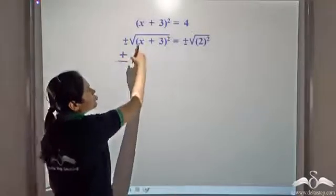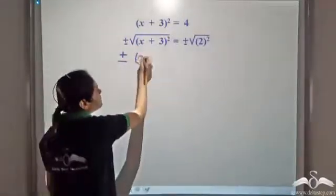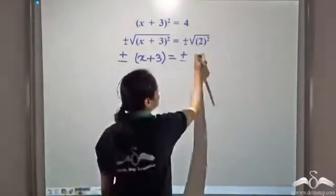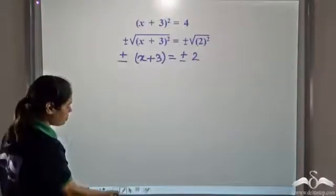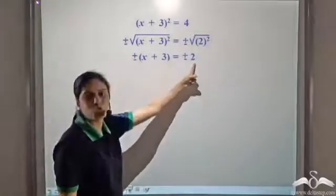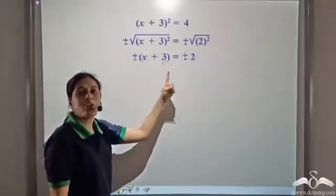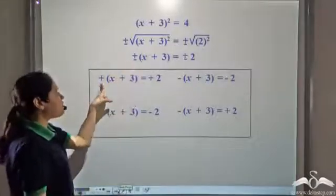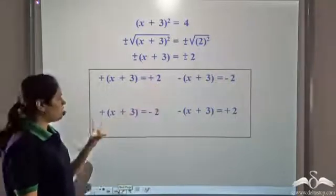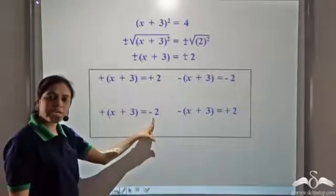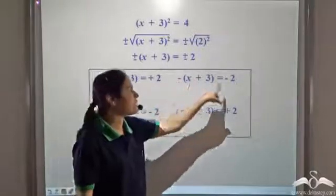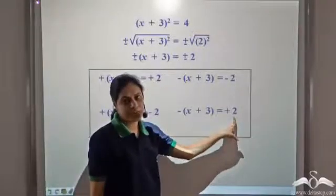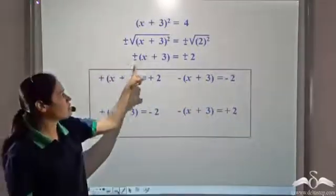Solving this, √(x+3)² = x+3, and on the right hand side we have ±√(2²) = ±2. So we have ±(x+3) = ±2. Now let us see what are the possible combinations: plus on the left and plus on the right, plus on the left and negative on the right, negative on the left and negative on the right, or negative on the left and positive on the right — four possible combinations.